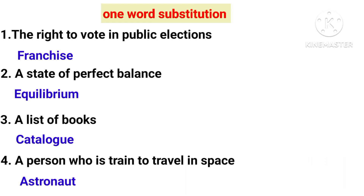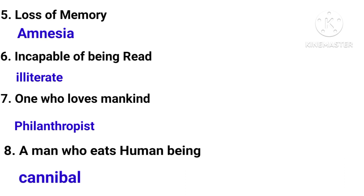Question number four: a person who is trained to travel in space — what will you say in one word substitution? The answer is astronaut. This is an answer everyone will know.